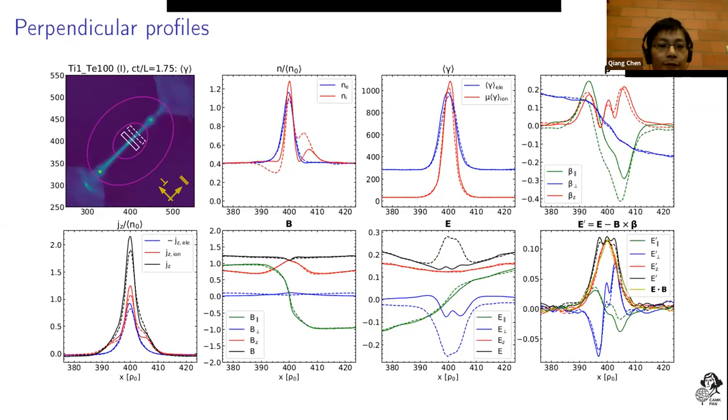The velocity, magnetic field, and electric field all have some kind of change across the current layer, so it's very typical for the tearing instability. There is also an ideal electric field which also helps for the particle acceleration.